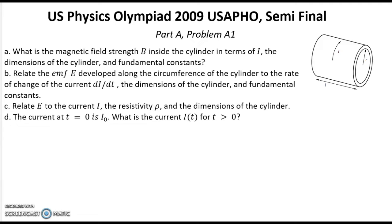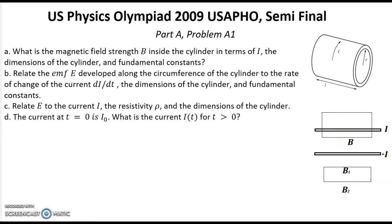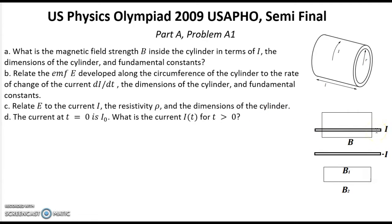Solution, Question A: What is the magnetic field strength B inside the cylinder in terms of I, the dimensions of the cylinder and the fundamental constants? Our cylinder looks like a solenoid and we can calculate the magnetic field inside using the formula for a solenoid. Let's use the same picture as for a solenoid. Suppose that the current on the upper side is going into the page and the current on the bottom side is going out of the page. Now we can use Ampere's law to find the magnetic field outside and inside such a cylinder.